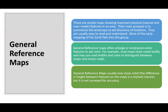General reference maps are simple maps intended to show important physical features in an area — both natural and manmade. Their main purpose is to summarize the landscape to aid discovery of locations. Most early mapping of the earth falls into this group, as it was more about observation of what we see around us. General reference maps often enlarge or emphasize some features to aid the user.